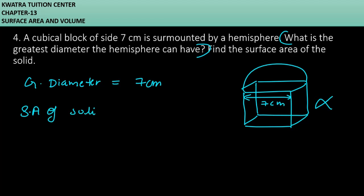So first of all, what do you have to do? You have to take the surface area of the cube. Then what do we have to do? We will add the curved surface area of this hemisphere.